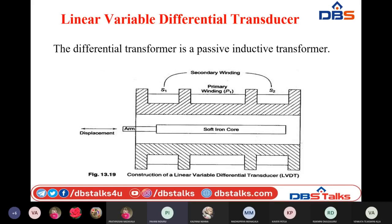In summary, the output voltage in response to displacement indicates direction by its sign — positive or negative. If the output contains positive voltage, the source and the output values are in phase. If the output voltage is negative, the voltage source applied at the primary winding will be 180 degrees out of phase in the output.